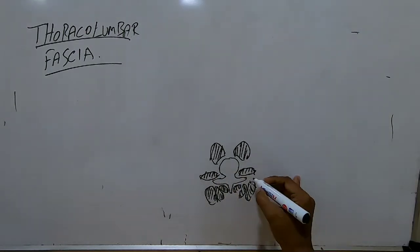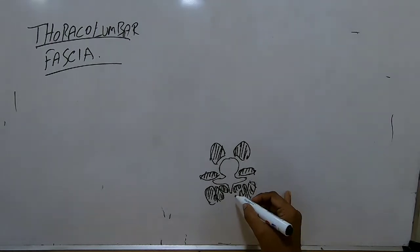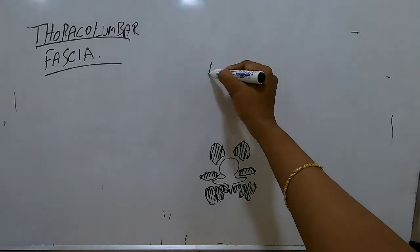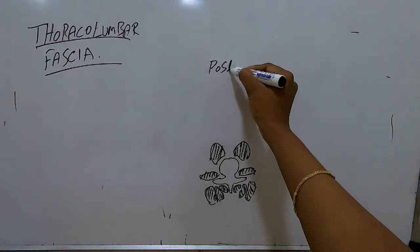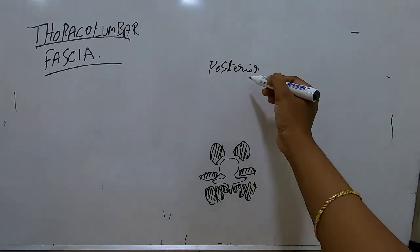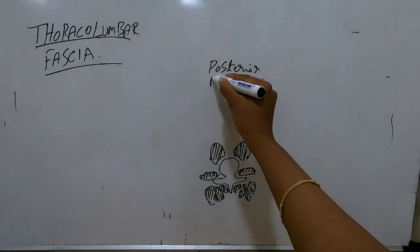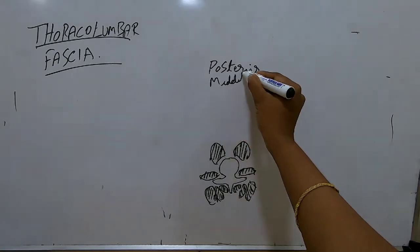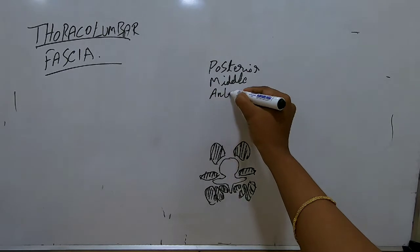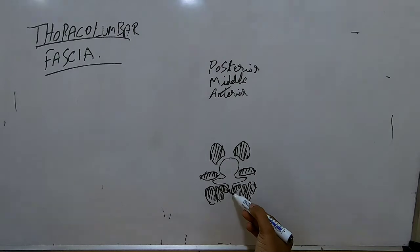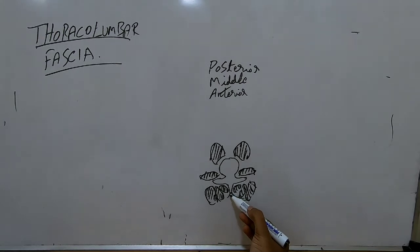Now we will discuss the three layers of the thoracolumbar fascia. It has three layers: the posterior layer, the middle layer, and the anterior layer. The posterior layer starts at the spinous process and covers the erector spinae muscle group.